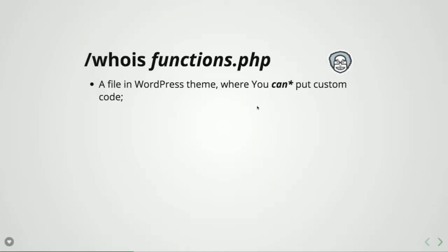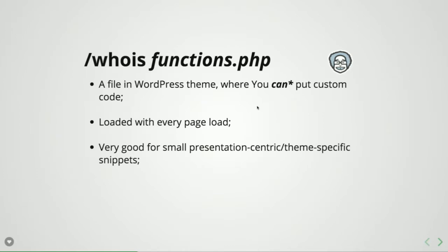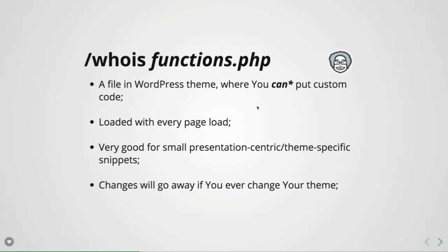Another place where you could put your code is functions.php. It's a file in any WordPress theme where you can put custom code and it will be executed. But there's an asterisk on 'can', because that you can doesn't always mean that you should. This file is loaded on every page load, so the bigger the file is and the more calls you have there, the bigger the impact on performance. It's very good for small, presentation-centric changes and theme-specific things. The very general rule is you don't put any code that you don't want to go away when you change the theme.